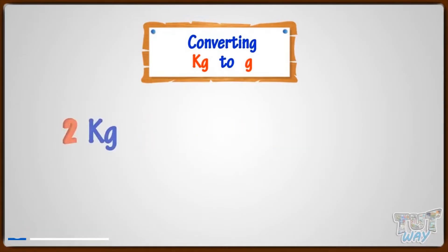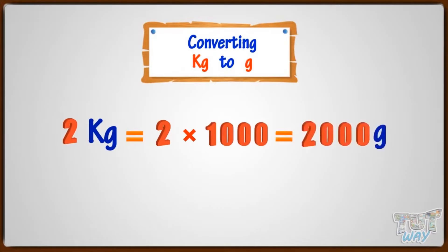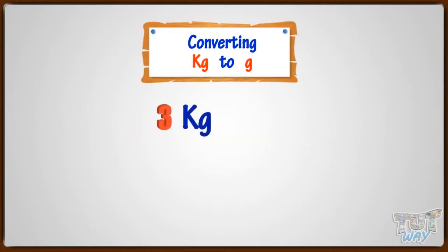So, two kilograms will be two multiplied by 1,000. That is 2,000 grams. Three kilograms will be equal to how many grams? Three will be multiplied with 1,000.